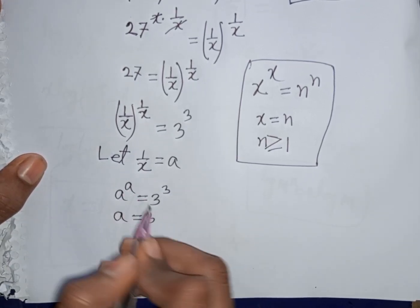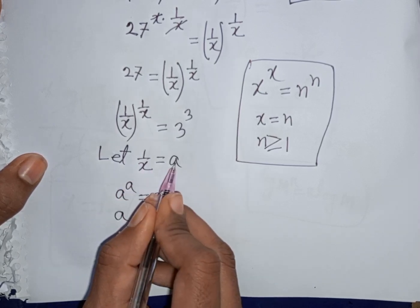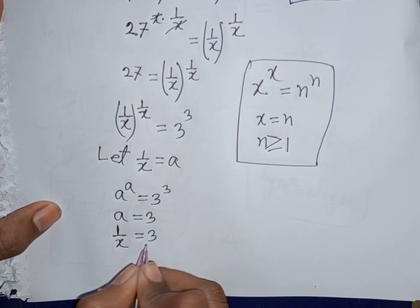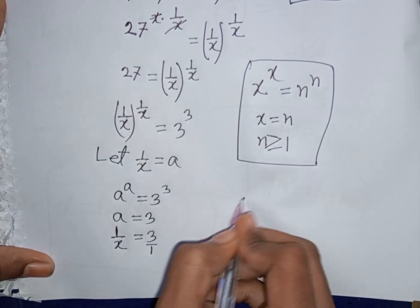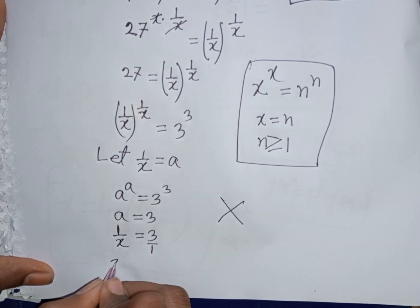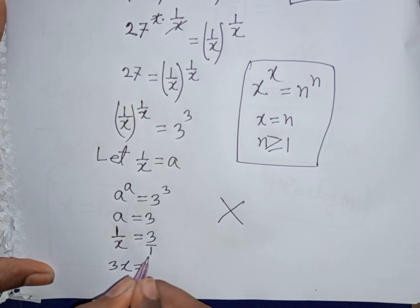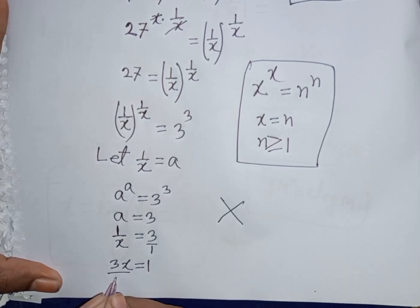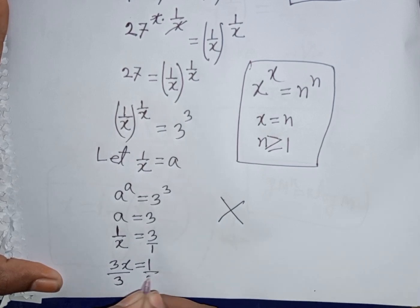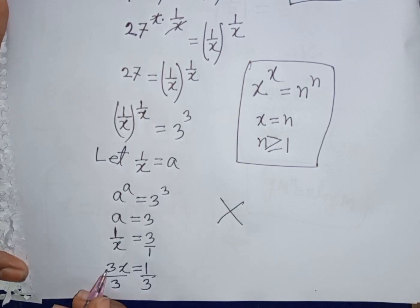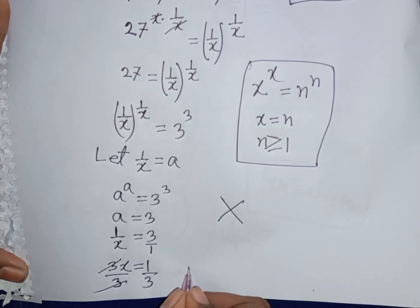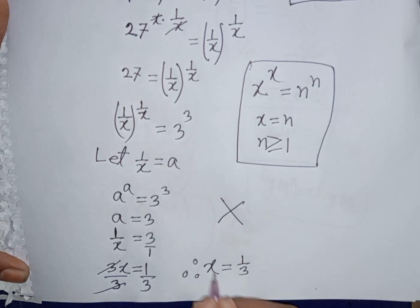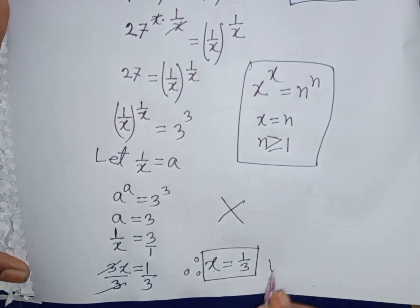Remember that 1 by x was substituted by a, so a means 1 by x is equal to 3, which can be written as 3 by 1. Applying cross multiplication, x times 3 gives 3x is equal to 1 times 1, which is 1. Dividing both sides by 3, this 3 will be cancelled, so x is equal to 1 by 3. This is our final answer.